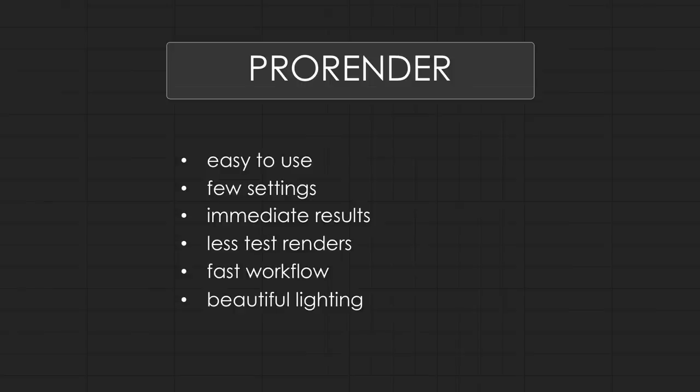From an artist's perspective it is incredibly easy to use. ProRender is directly integrated into Cinema 4D and works with the native material system. It has very few settings so you don't have to study tutorials or manuals. You see results immediately, which means you need to do less test renders and have a faster workflow than with the standard renderer or physical renderer, which don't show you the results that quickly.